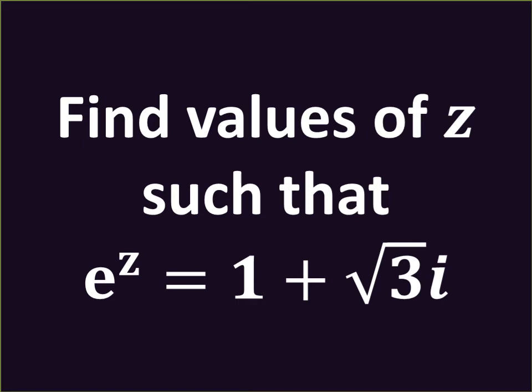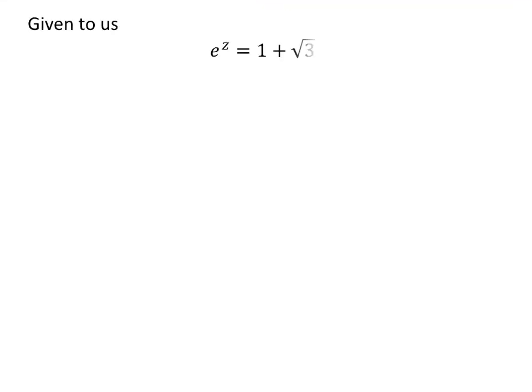In this video, we will learn to find the values of Z such that exponential of Z is equal to 1 plus square root of 3 times iota, where iota is the imaginary unit. Given: exponential of Z is equal to 1 plus square root of 3 times iota.